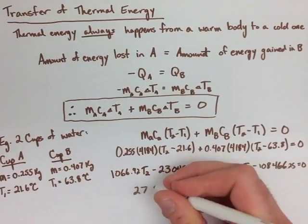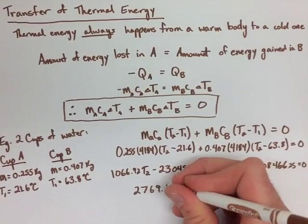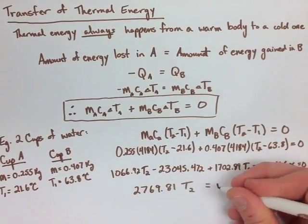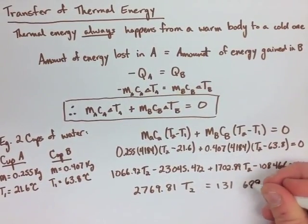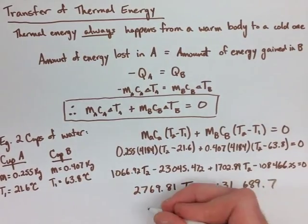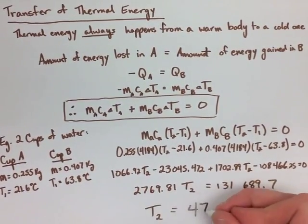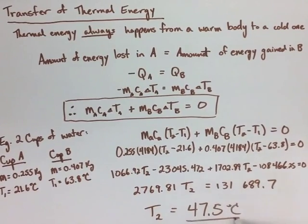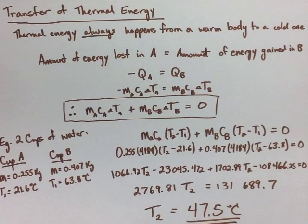We end up then simplifying more to get 2,769.81 T2 equals 131,689.7. So T2's final temperature is 47.5 degrees Celsius.